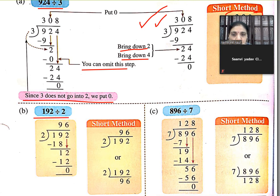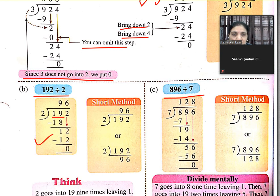96 divided by 7. 7 1s are 7, remainder 1. We bring 9. 7 2s are 14, we write here 14. Then 7 8s are 56.